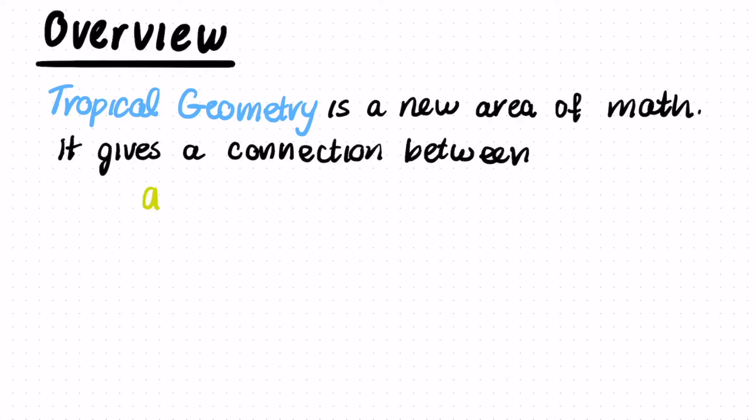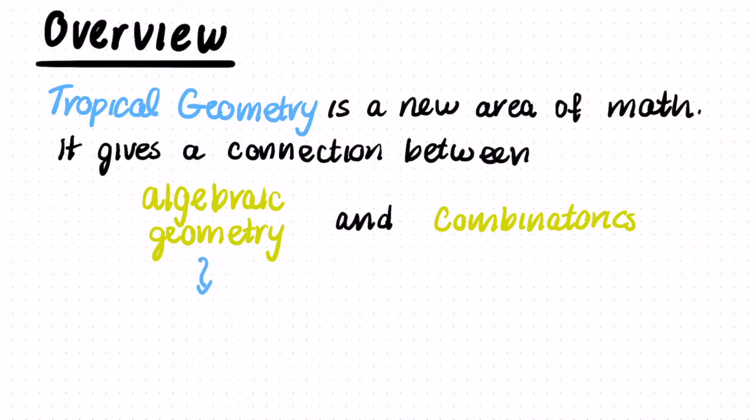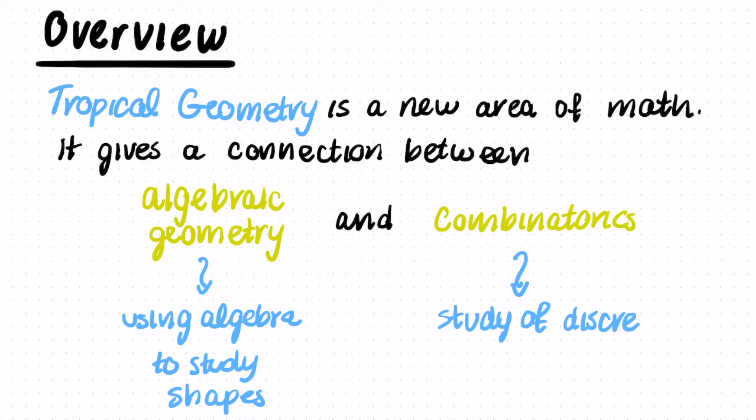Tropical geometry is a relatively new area of math that gives a connection between algebraic geometry and combinatorics. Algebraic geometry is the study of shapes that come from polynomial equations, so we're using algebra to study shapes. Combinatorics is the study of discrete objects and counting those objects.